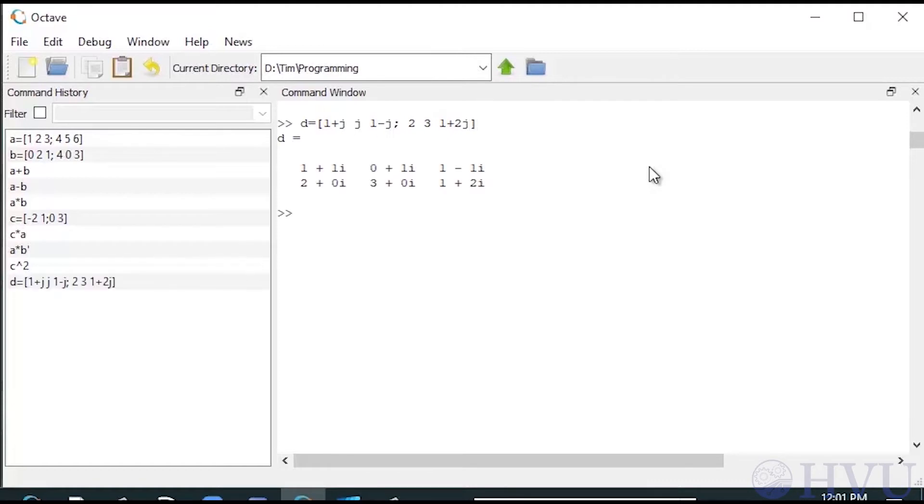If I transpose D with the dotted operator, so D dot quote, the rows convert to columns, and vice versa. If I take its transpose using the undotted operator, however, the imaginary components of the complex coefficients change sign.